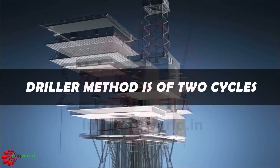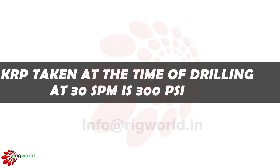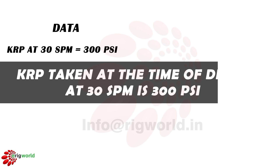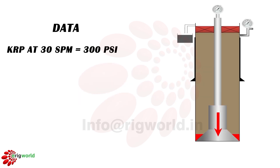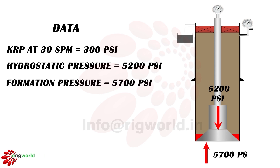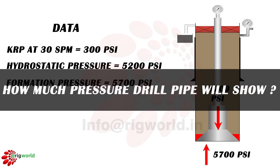The driller method consists of two cycles. Well data: KRP taken at the time of drilling at 30 SPM is 300 psi. Hydrostatic pressure due to mud and drill string acting downwards is 5200 psi. Formation pressure acting upwards is 5700 psi. How much pressure will the drill pipe show?